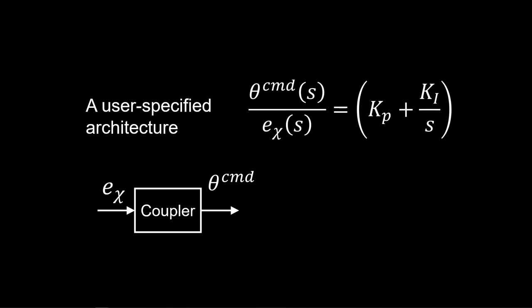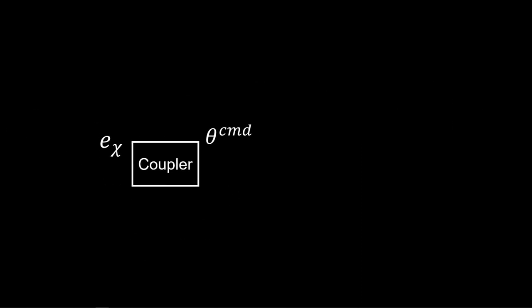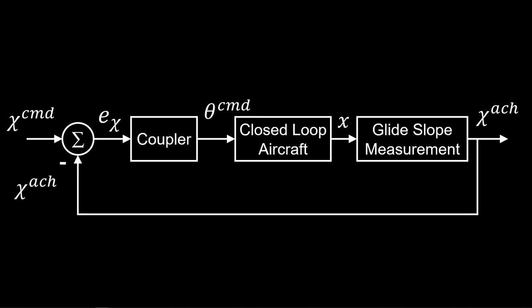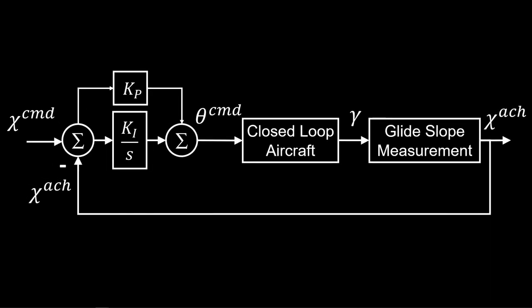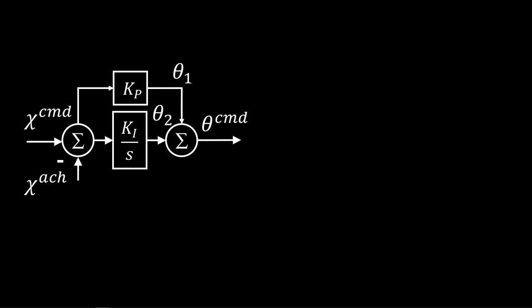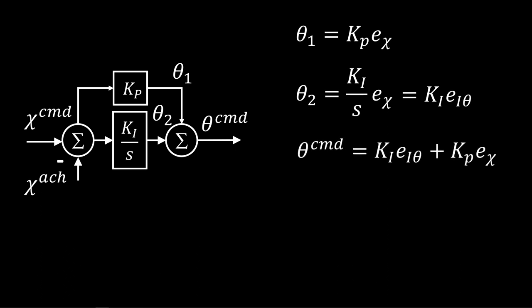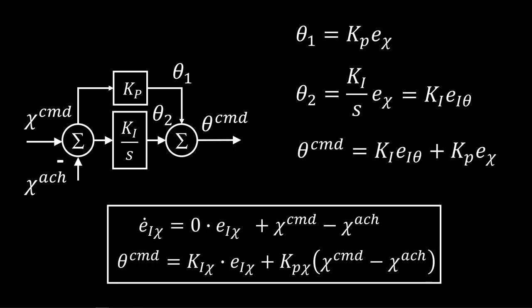The glide slope coupler is a user-specified architecture — here, a simple PI controller. It relates the glide slope error to the commanded pitch angle. The coupler outputs the command to the closed-loop aircraft. We think about the need to simulate in the time domain, so we desire an ODE system for this PI controller. Taking the inverse Laplace transform, we produce the time domain PI controller with pitch angle command output and the integral error of glide slope as the state.